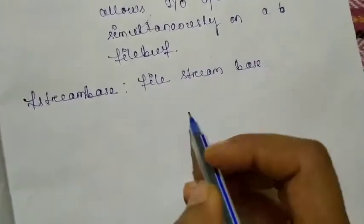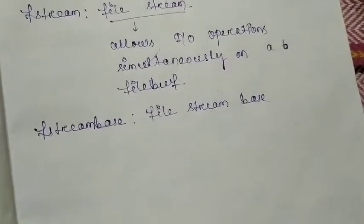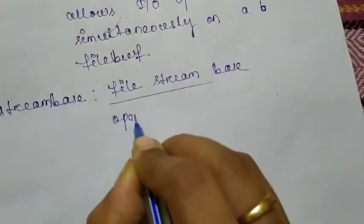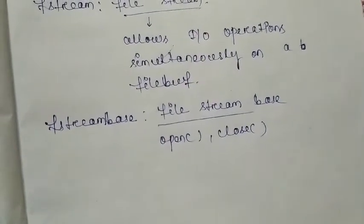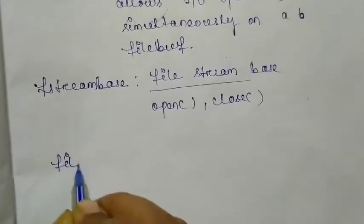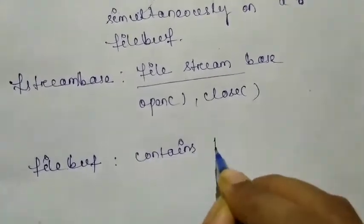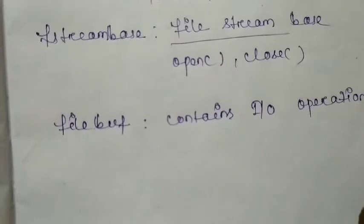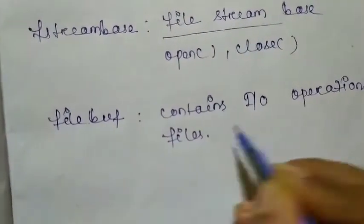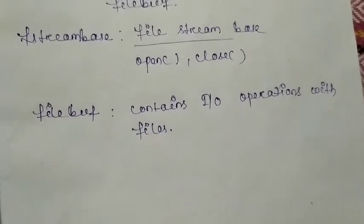The fstreambase class stands for file stream base. It acts as a base class for fstream, ifstream, and ofstream. The functions provided include the open function and close function. Finally, the filebuf class handles I/O operations with files. That is all about C++ stream classes.